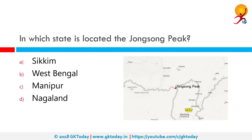In which state is Jongsong Peak located? Jongsong Peak is a mountain in the Janak section of the Himalayas. Jongsong summit is on the tri-junction of India, Nepal and China in the state of Sikkim.